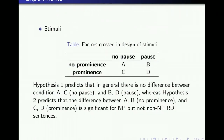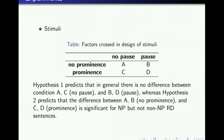Since there are two factors patterned together in natural speech, we detached them and created synthesized stimuli to assess their relative contribution. As shown in the table, condition A — non-pause, non-prominence — is supposed to indicate the default prosody of RD sentences, while conditions B, C, and D are manipulated conditions.